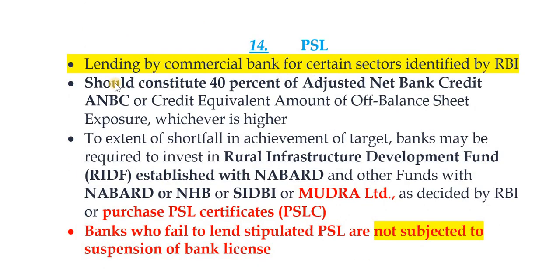Priority Sector Lending (PSL) refers to lending by commercial banks for certain sectors identified by RBI. It should constitute 40% of adjusted net bank credit (ANBC) or credit equivalent amount of off-balance sheet exposure, whichever is higher. If banks fail to achieve the 40% target, they must invest the shortfall amount in RIDF — Rural Infrastructure Development Fund — established with NABARD, or other funds with NABARD, National Housing Bank, SIDBI, or Mudra Limited, as decided by RBI.